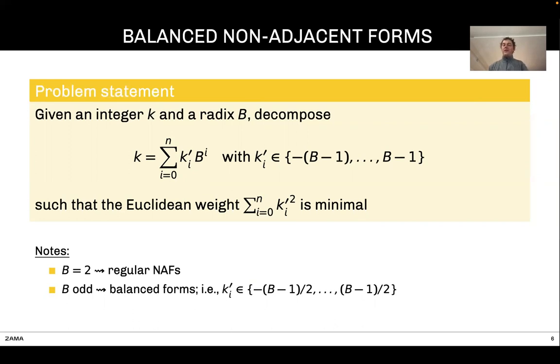We already know a couple of pretty good decompositions. For example, when the radix is equal to two, we know that the NAF, the non-adjacent form, has the maximum number of zero digits into its decomposition. In the case of another radix B, if you decompose an integer in the range minus (B-1)/2 up to (B-1)/2, the form is balanced and the weight is also minimum. The difficult case is when B is even and larger than two.